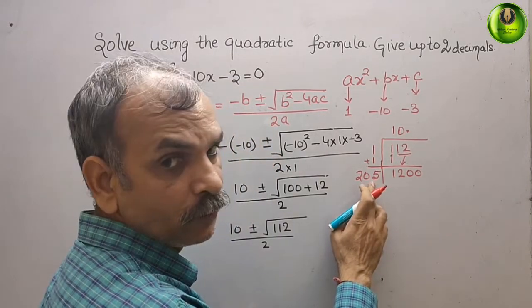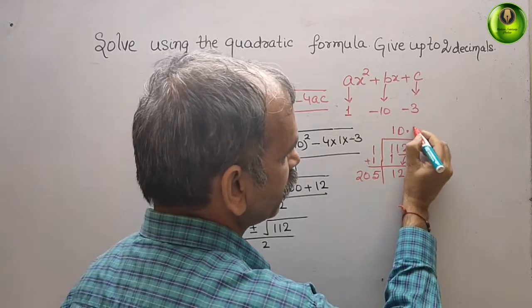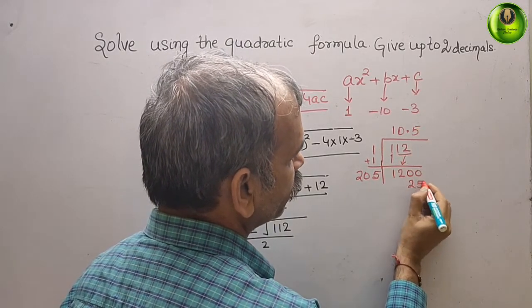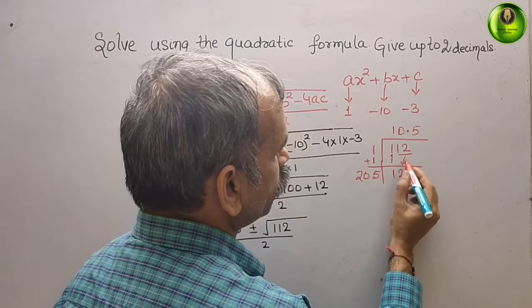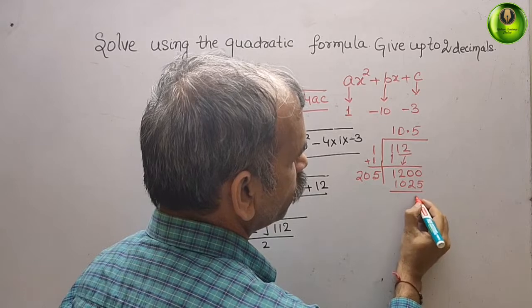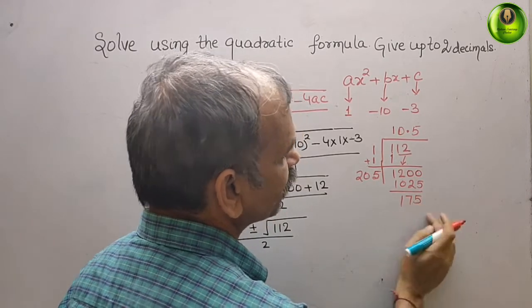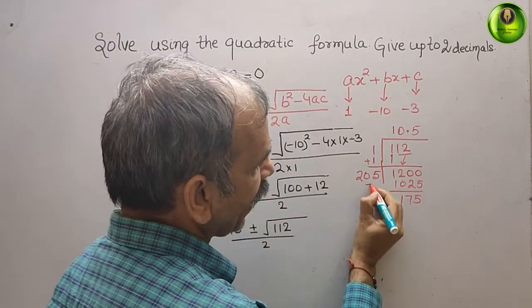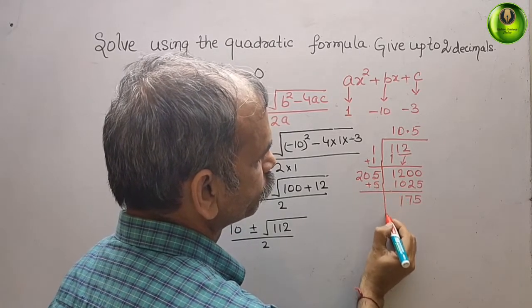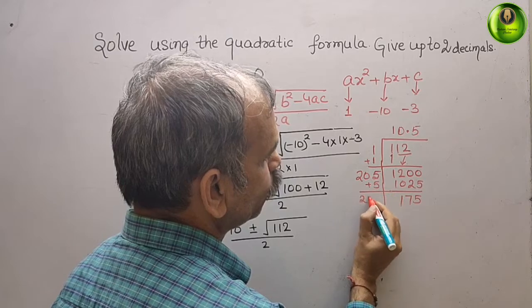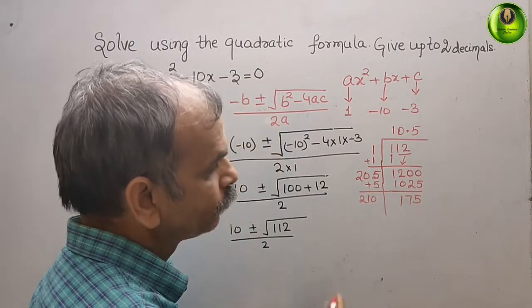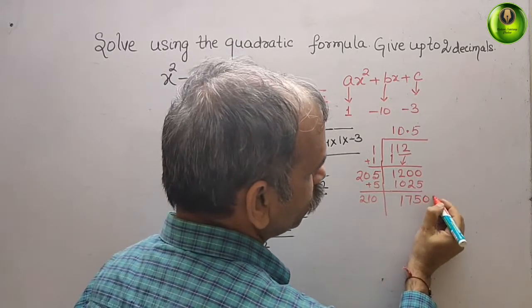6 times it will not go. So 5 times means here you put 5. 5 times 5 is 25. 0 and 10. Here you get 57, 1, 175. Again add 5 here. We get 210, and place 2 zeros again.